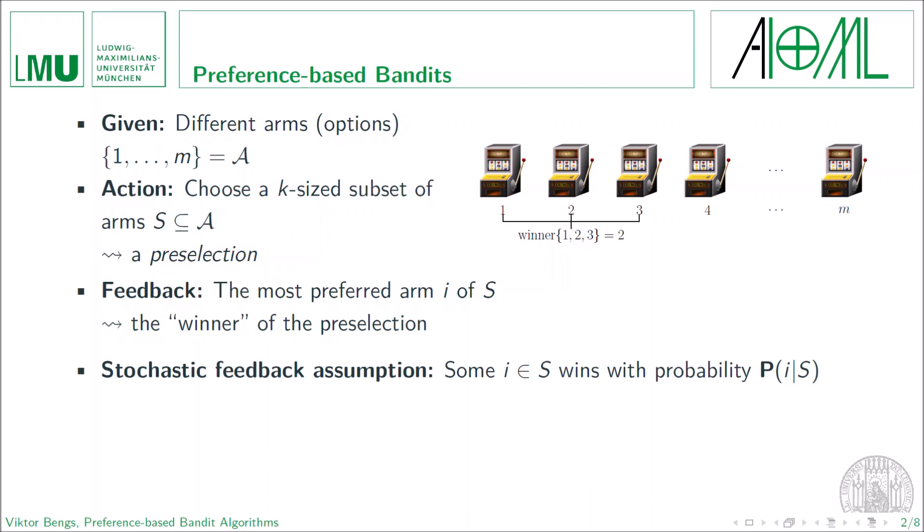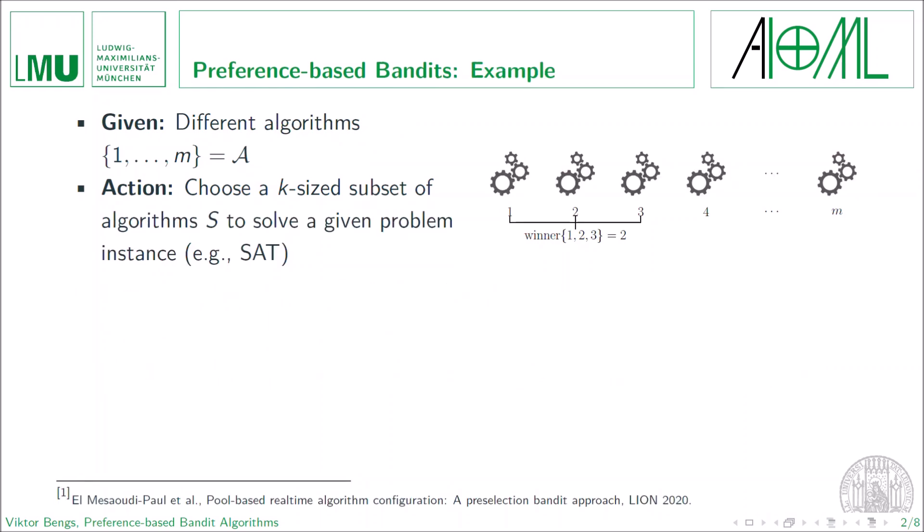Now the question is, how is the winner of a specific preselection determined? What we assume is that there is some unknown probability distribution which describes the underlying feedback mechanism. Now let us give a real-life example for such a preference-based bandit setting. Let us consider the problem of algorithm selection. In this case, our choice options are the M-many algorithms which we have available to solve a specific problem instance.